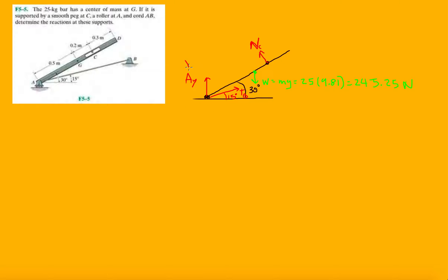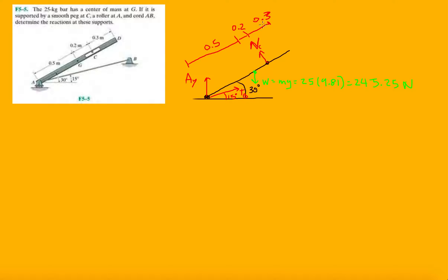We have our distances. These problems just get longer and longer, but chapter 5 problems are probably the longest in the book, then they start shortening up again. This is 0.2 and 0.3 — until we get to shear and moment diagrams, which you might not cover in statics.